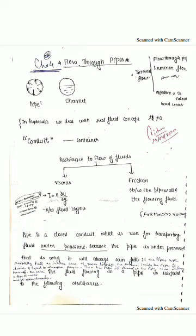Flow through pipe means fluid under pressure is flowing in a closed conduit or pipe. Because the pipe is under pressure, it will always run full. But flowing of fluid in a closed conduit does not always mean it is a case of flow through pipes. Take the example of sewer lines — sewer lines are not a flow through pipes case.